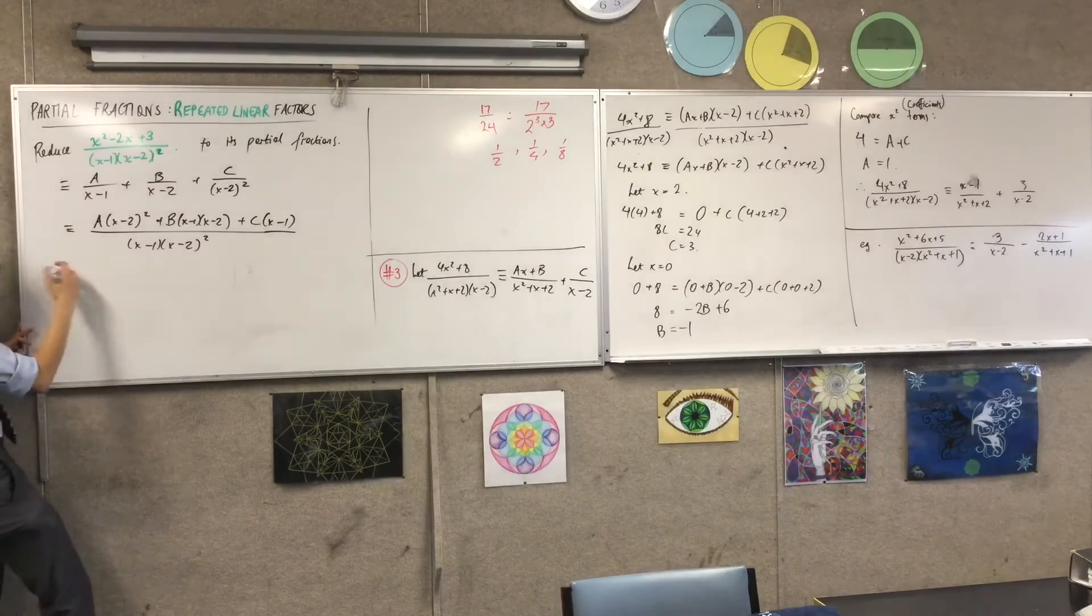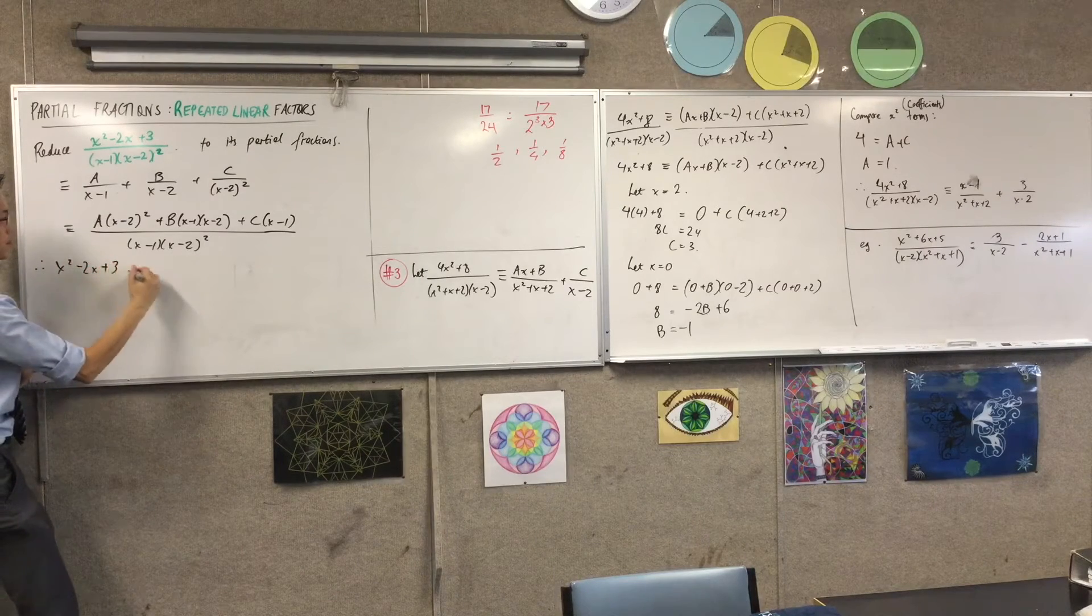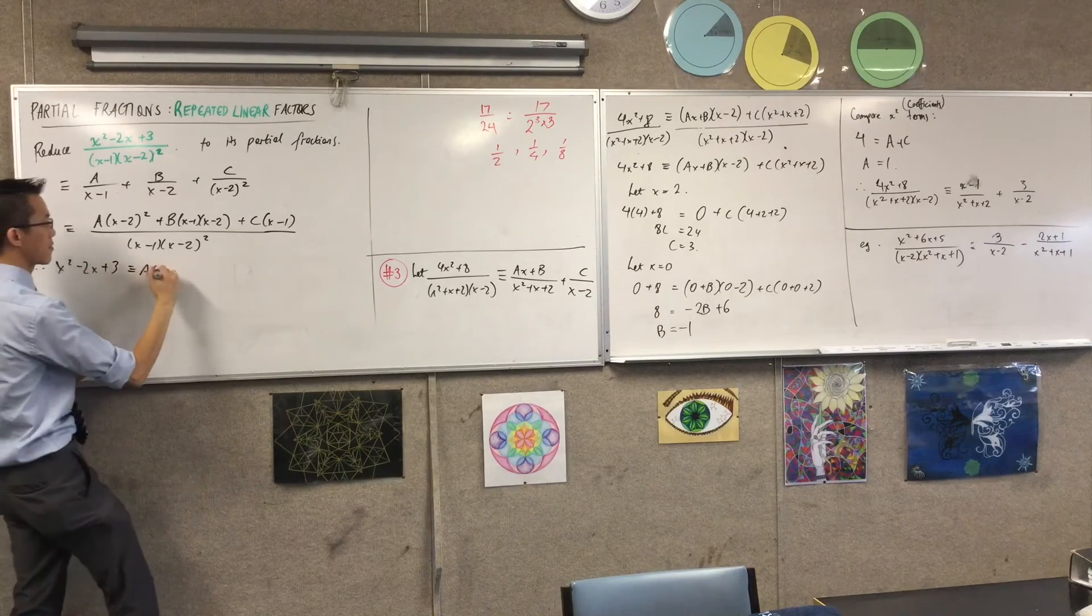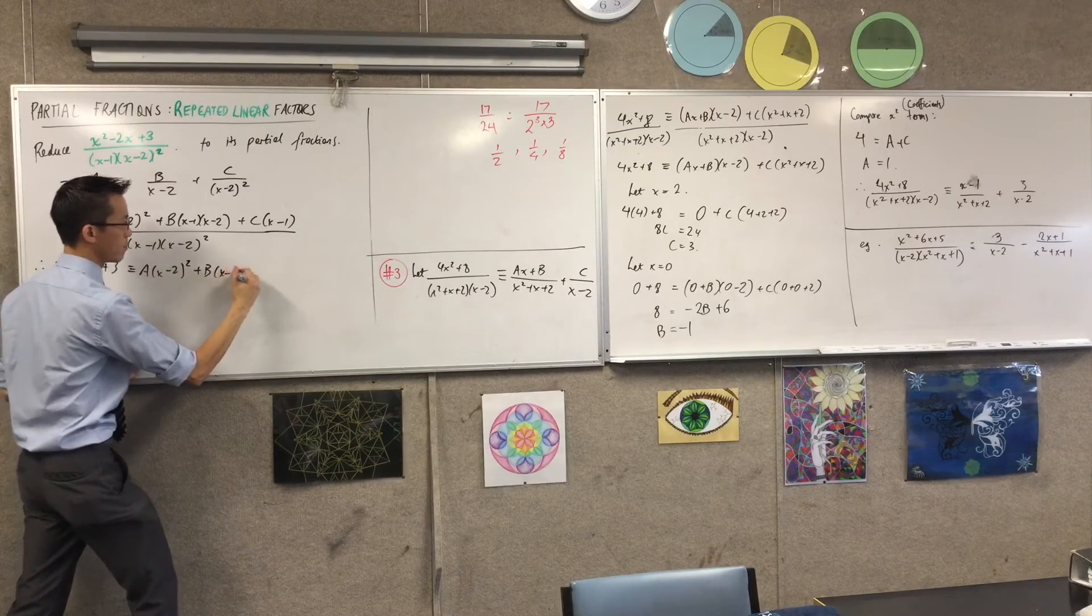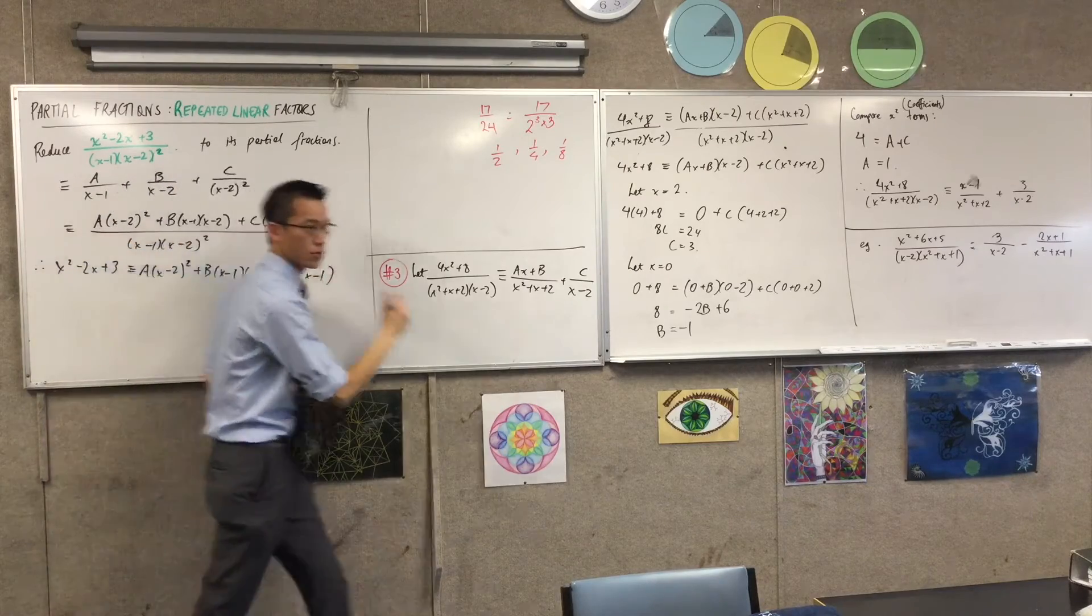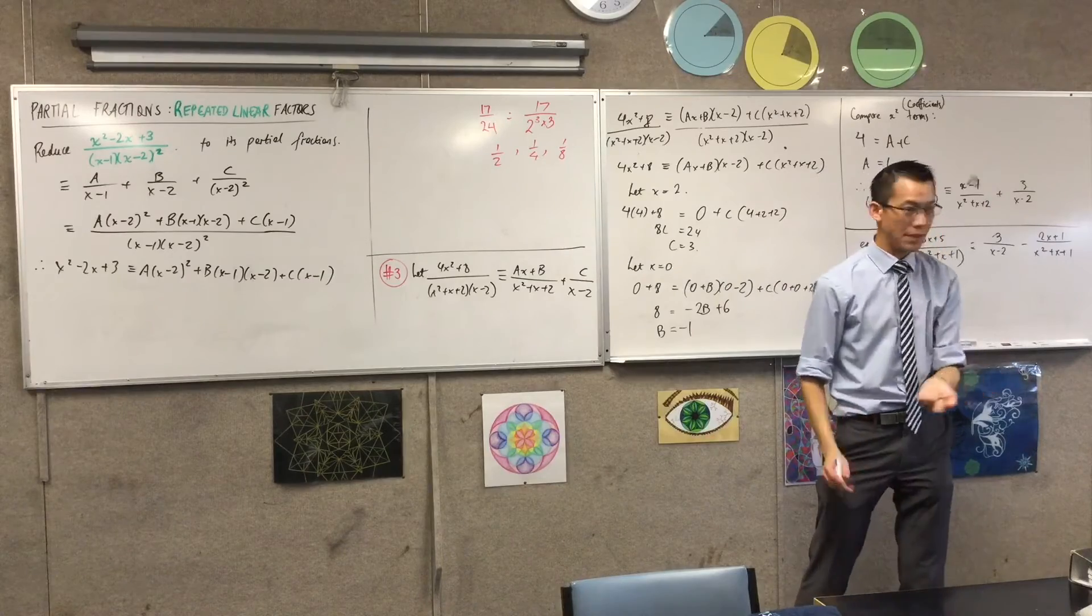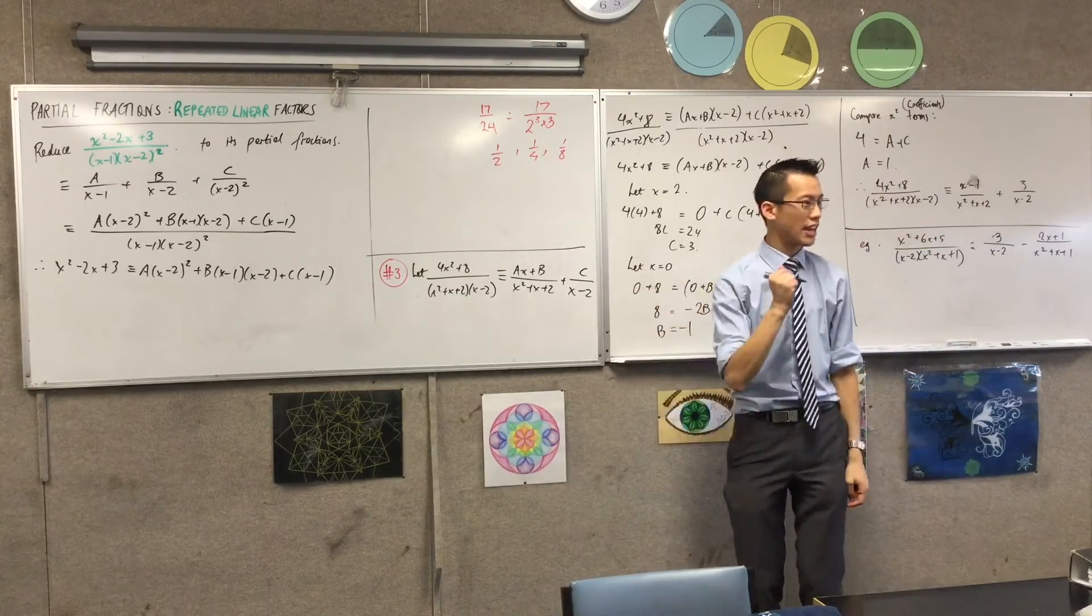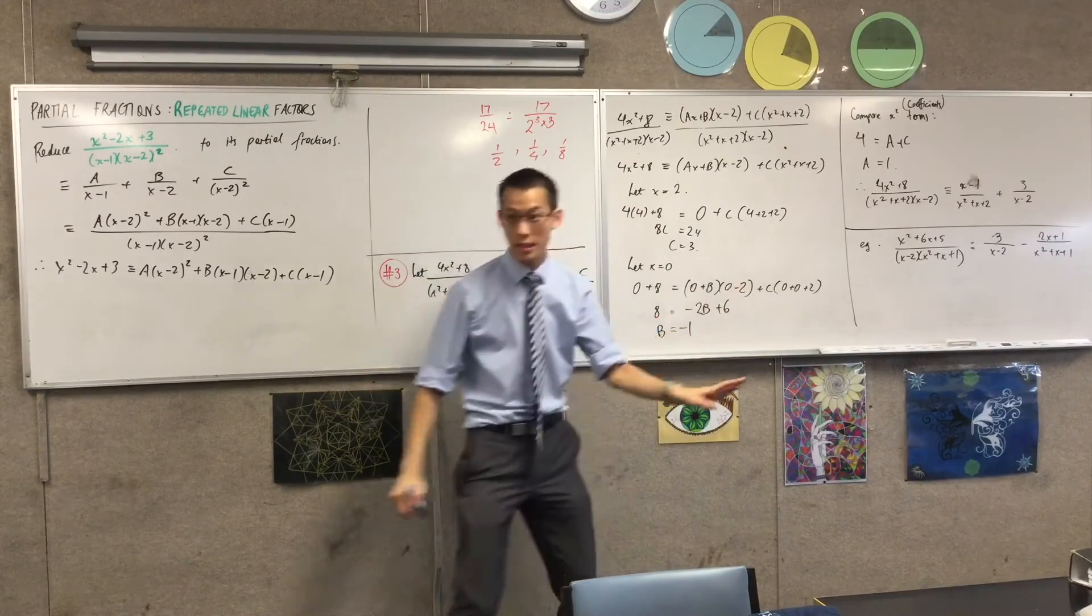If I let the numerators be equal to each other, therefore, x squared minus 2x plus 3. Now, I can choose some convenient values. What would you like me to choose? How about x equals 1? You can see when I do x equals 1, because of the way this is configured, it's going to get rid of not 1, but 2 terms. This one and this one, both going to vanish. Do you see that?